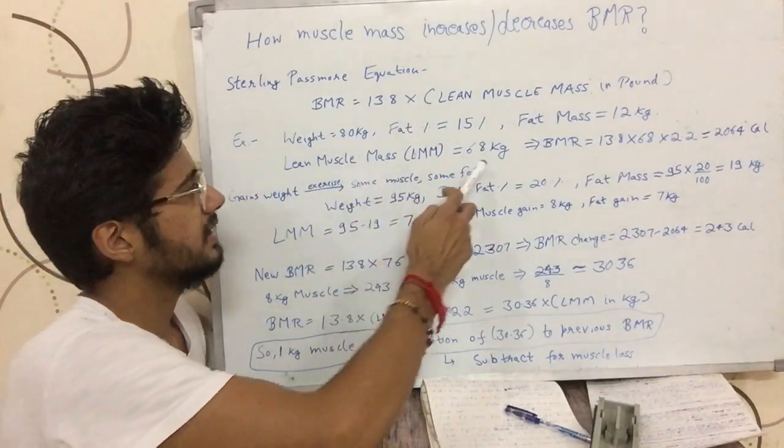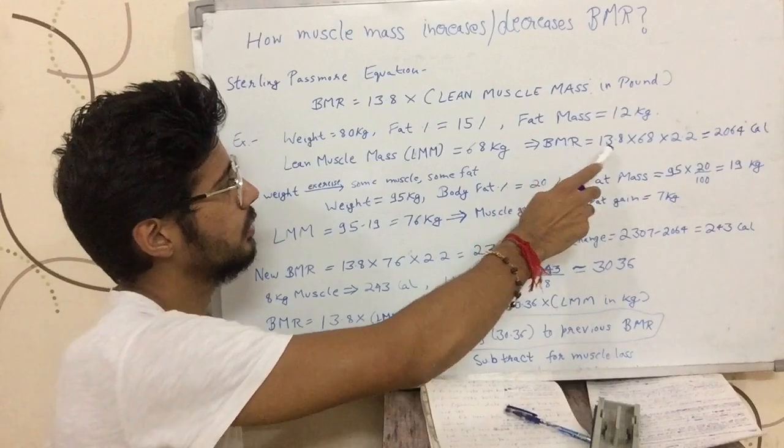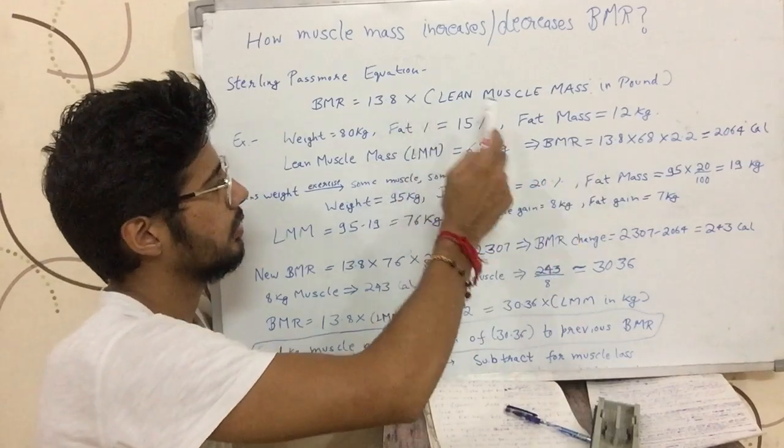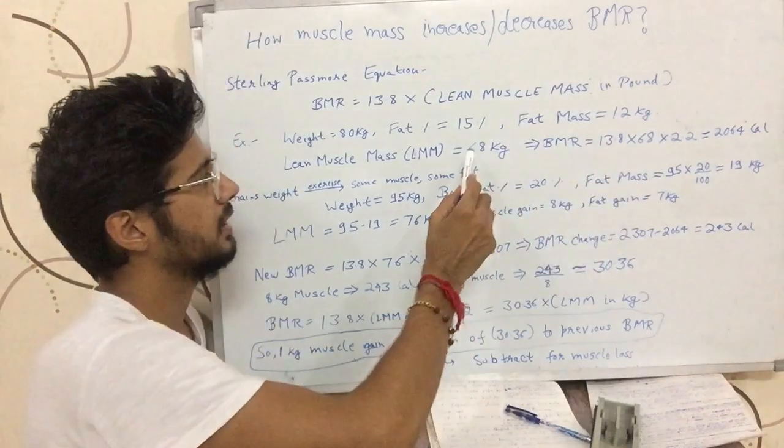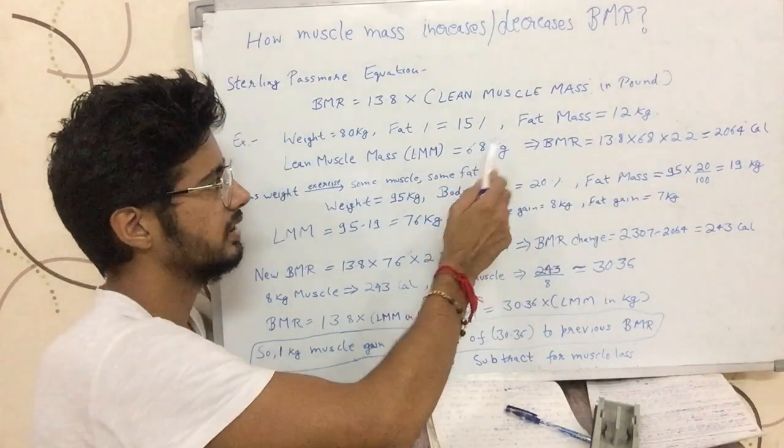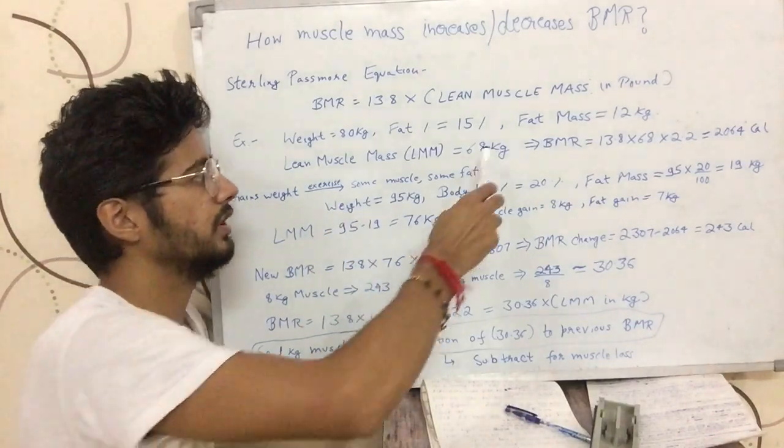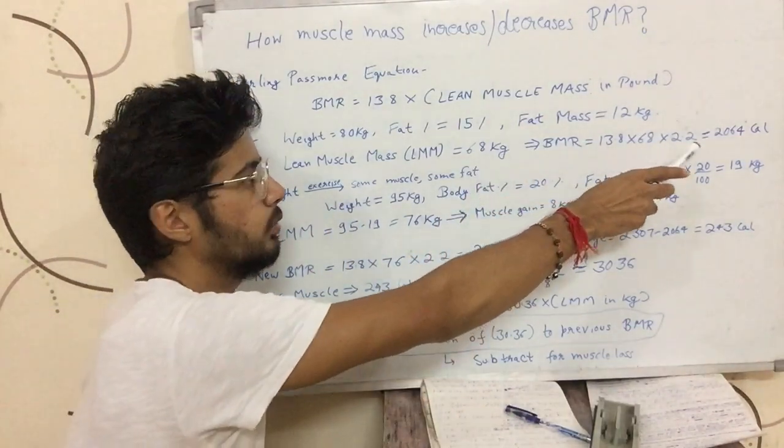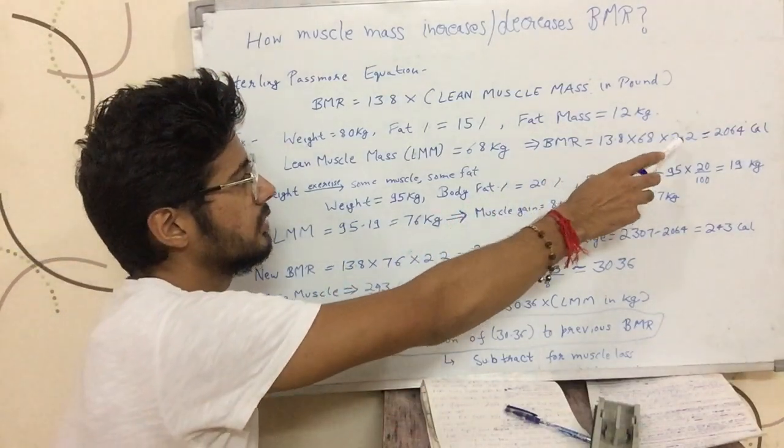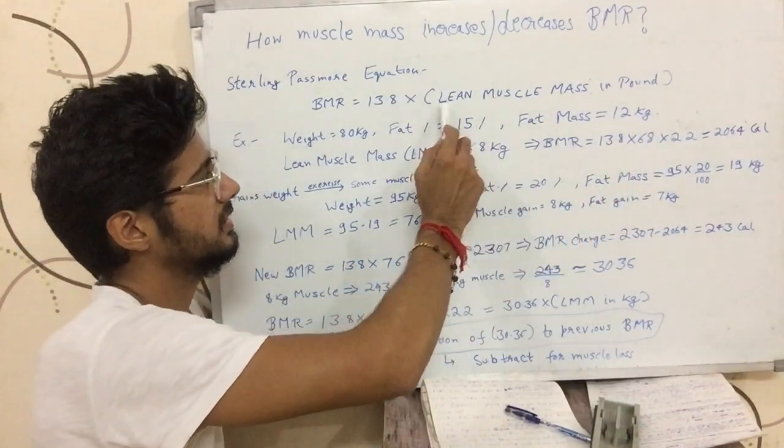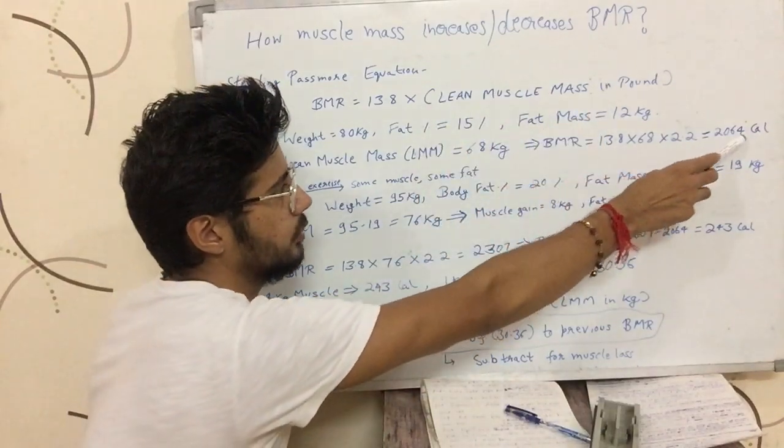This guy has lean muscle mass of 68 kgs. His BMR comes out to be, according to this formula, 13.8 into 68 into 2.2. We converted 68 kgs into pounds. 1 kg has 2.2 pounds, so we multiplied it by 2.2 approximately. This formula has lean muscle mass in pounds, so we got the number of 2,064 calories.